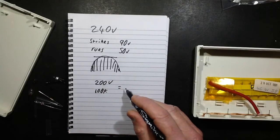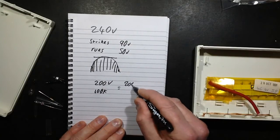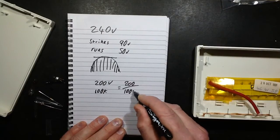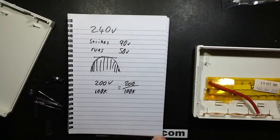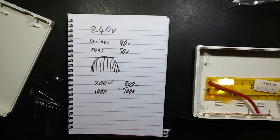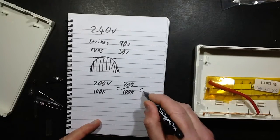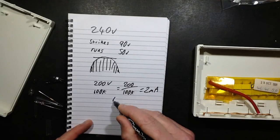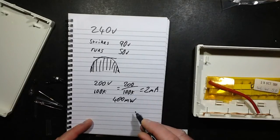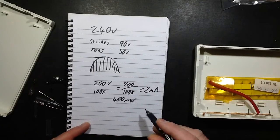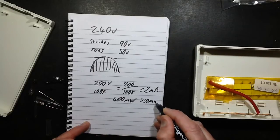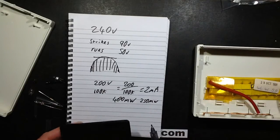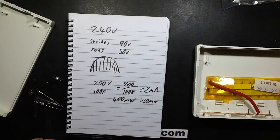If you work the current out, I equals V over R. So that's 200 divided by 100 K, so let's say I get that accurate. Well, that's 2 milliamps, isn't it? 200 divided by 100,000 equals, yeah, 2 milliamps. And that means the resistor is dissipating 2 milliamps times 200 volts is 400 milliwatts. And the resistor they're using is a quarter watt resistor. It's only rated at 250 milliwatts. So it's being overdriven and that's continuous, it's happening 24/7.